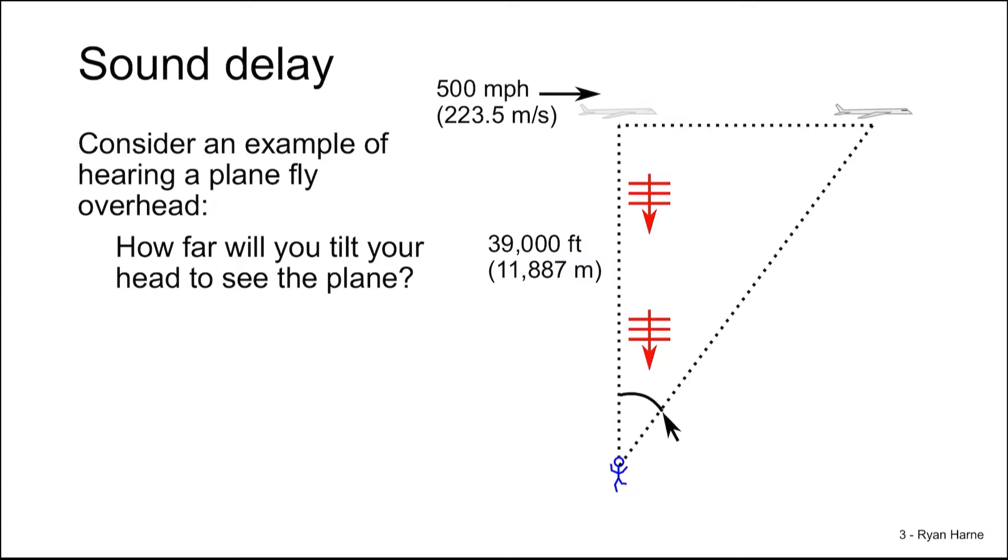Consider a plane is flying overhead at around 500 miles per hour or 223 meters per second. It's flying at cruising altitude around 39,000 feet, which is around 11,887 meters. The question could be, how far are we going to tilt our head up from ground when we see the plane? So we hear the plane and look up, but we're not looking up 90 degrees as we might already recognize. We're looking up a more shallow angle. So we need to run the numbers.